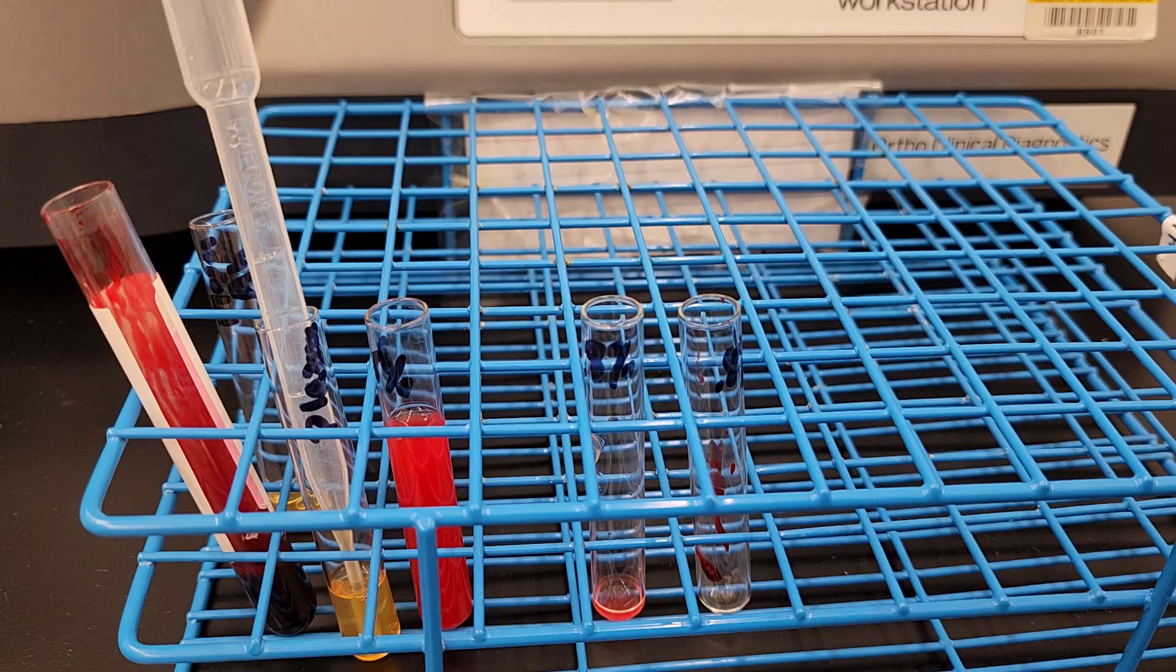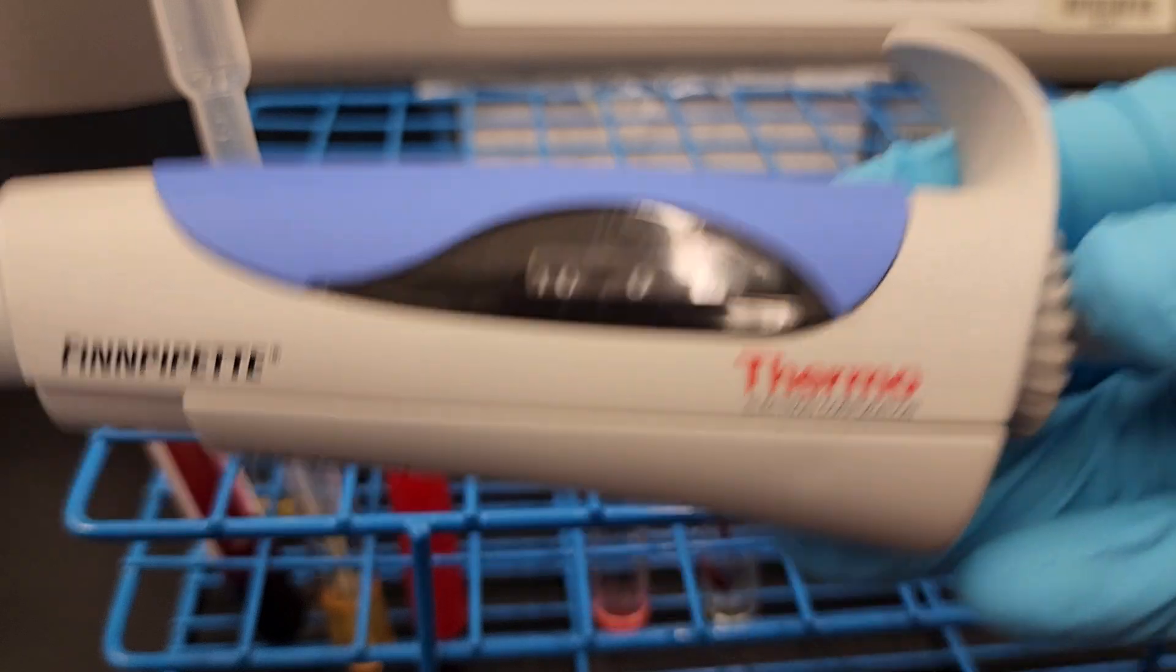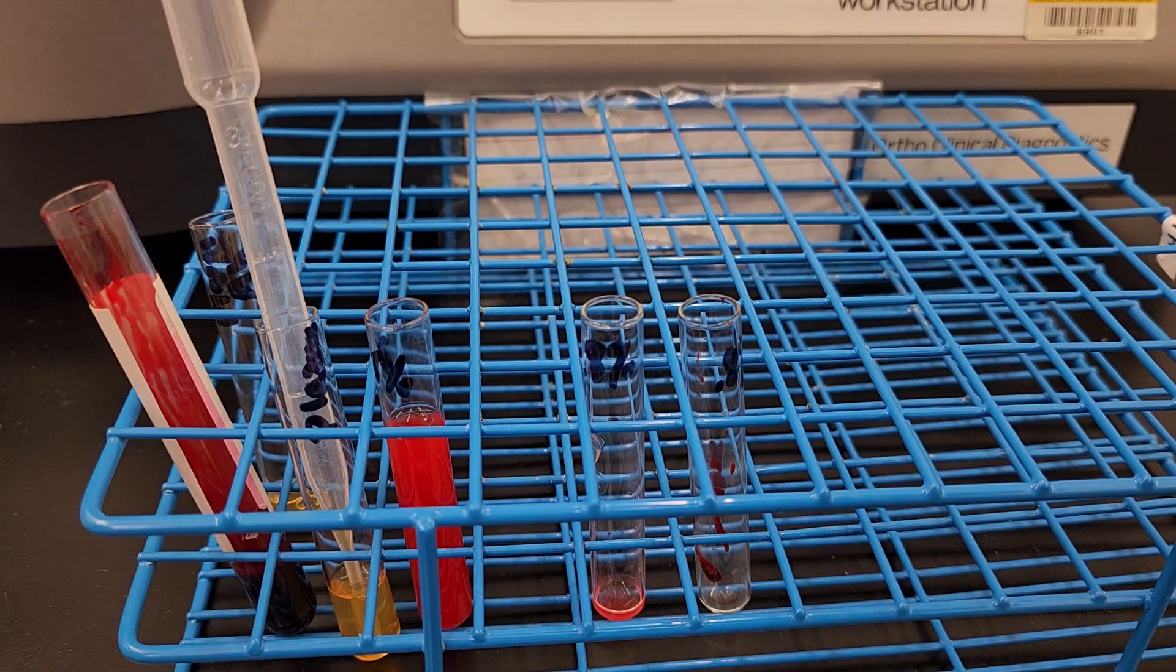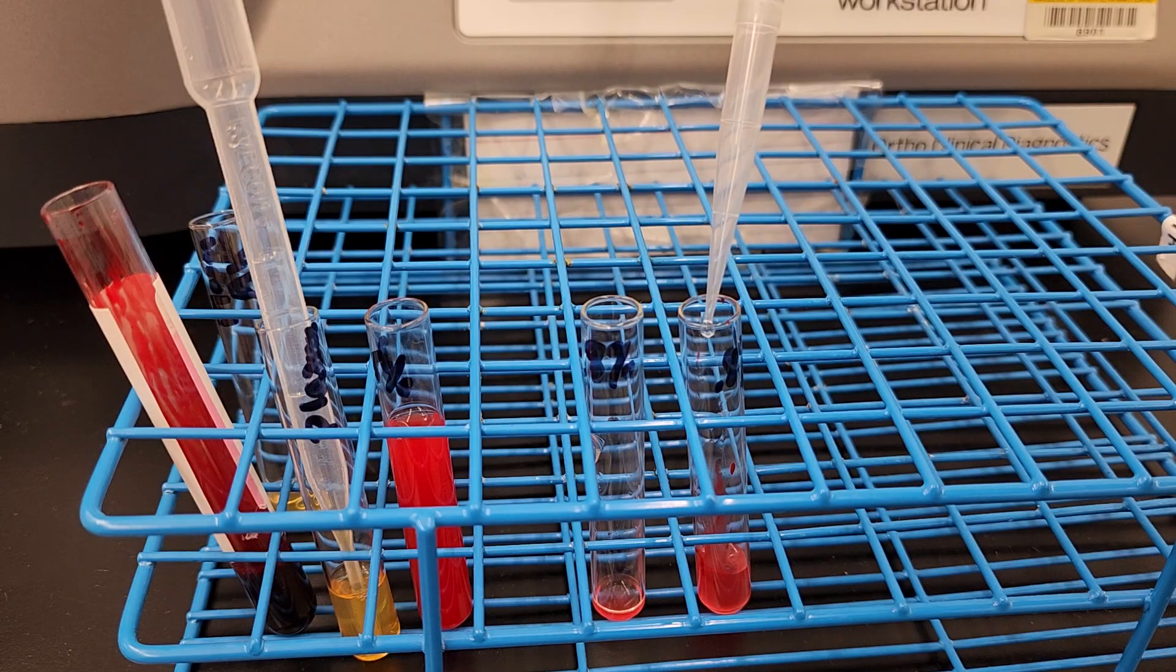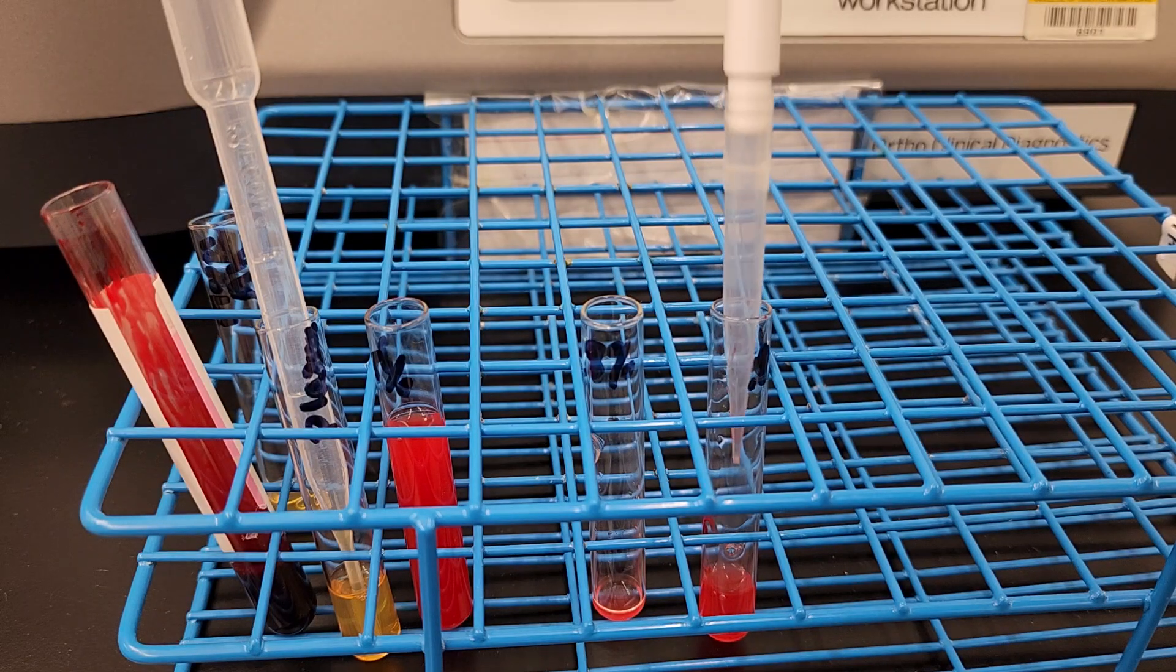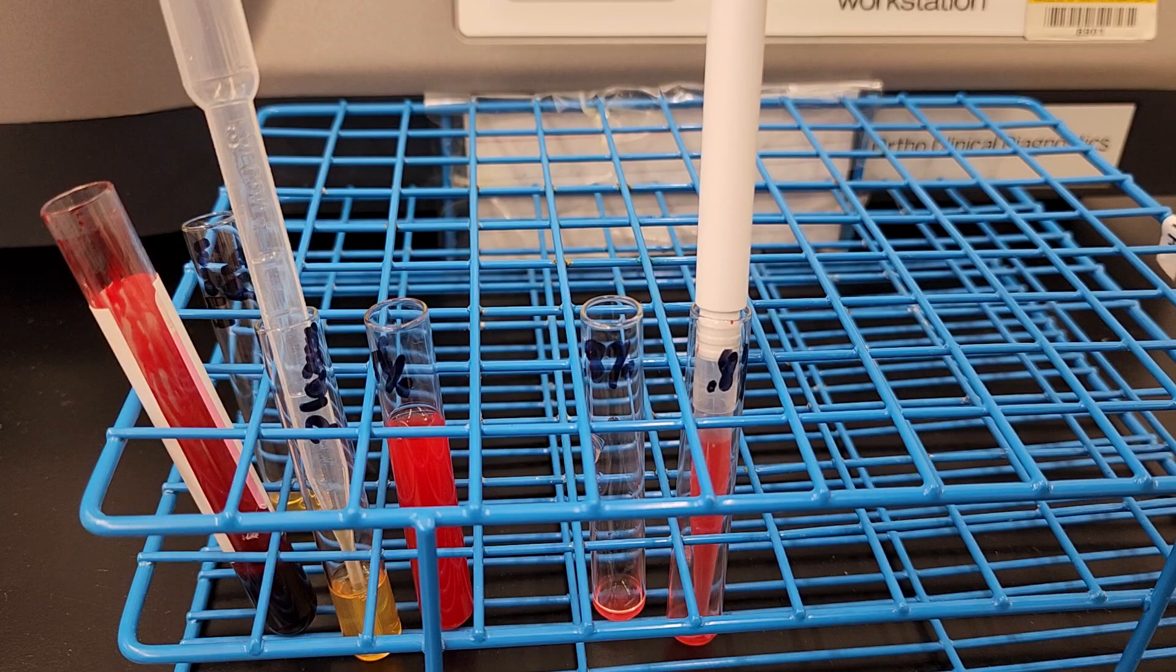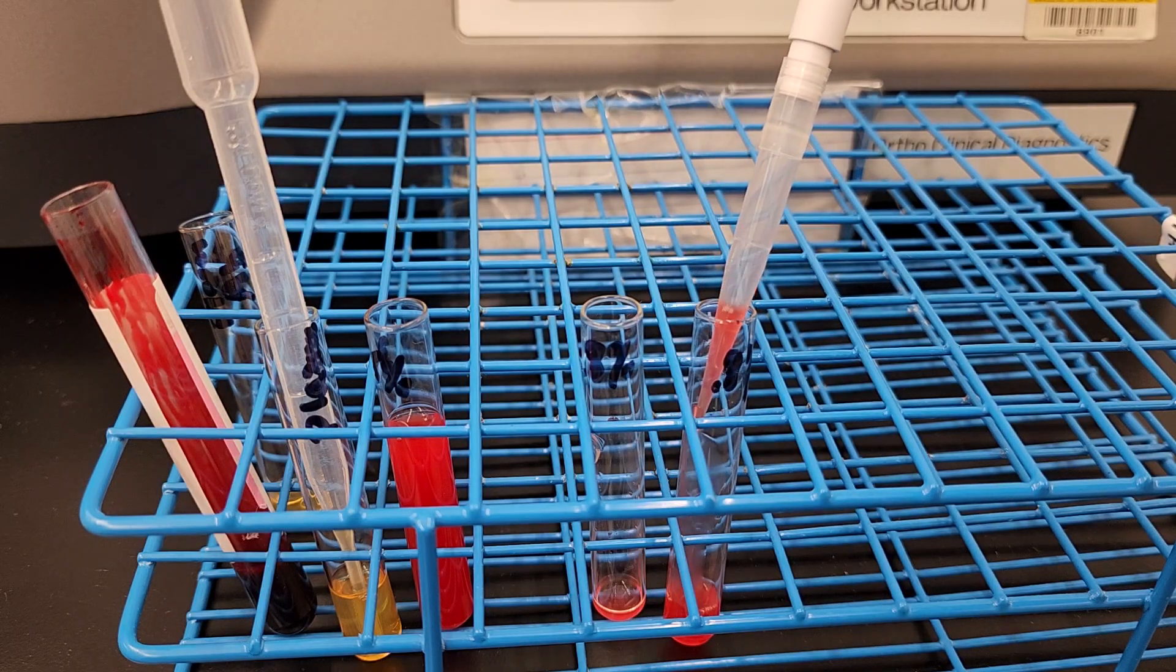And we're going to do 1000 microliters of the saline. All right, so 1000 microliters of the saline. Okay, you can mix this as well. Make sure you're getting all of the cells off of the side of the tube. And now you can see it is much lighter, just like the reagent.